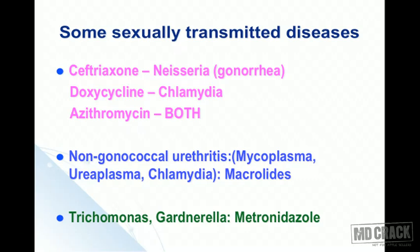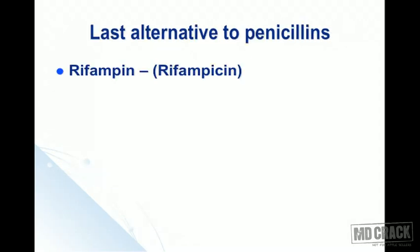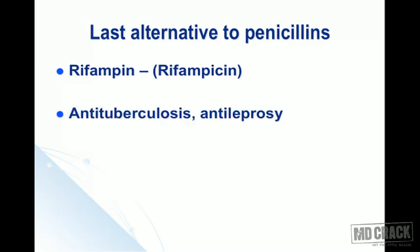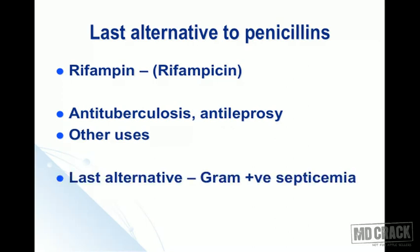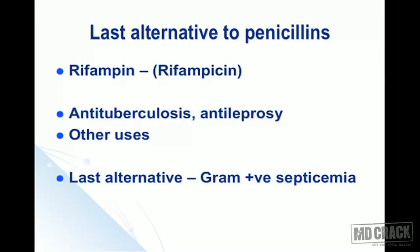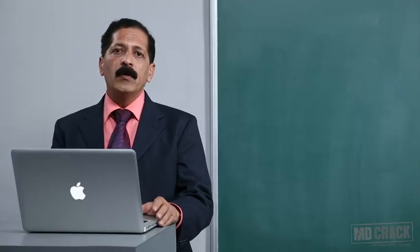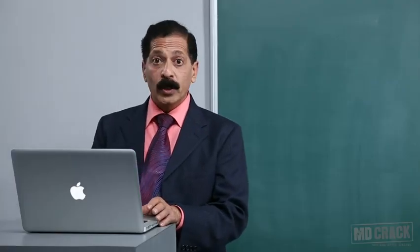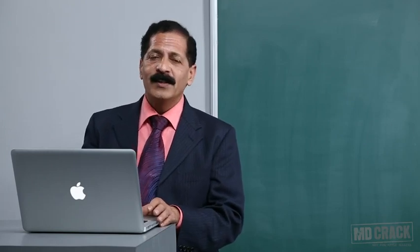The last alternative to penicillin is rifampin (rifampicin) — an anti-tuberculosis and anti-leprosy drug with many other uses, serving as the last alternative for gram-positive septicemia. Rifampin will be discussed in detail in the tuberculosis module. I hope you enjoyed this module on macrolides and found it useful.